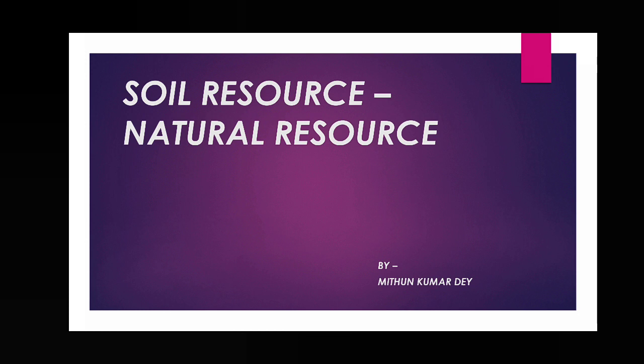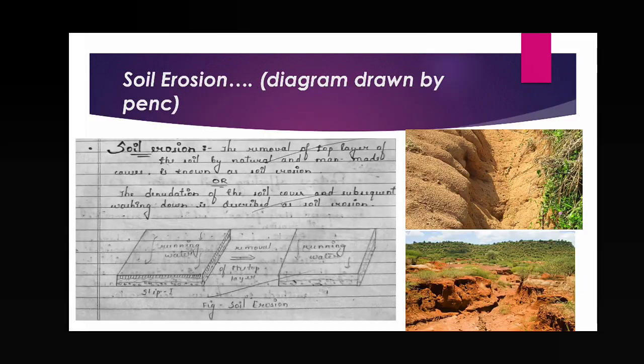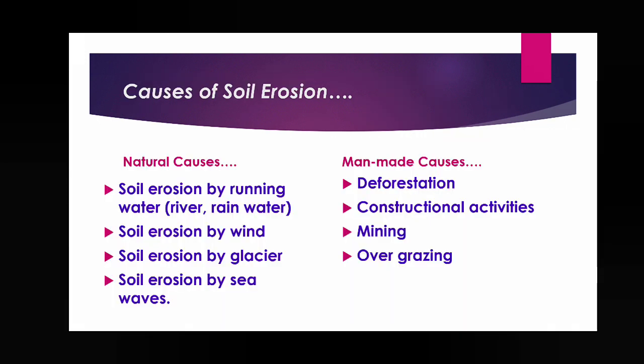We already discussed what is called soil erosion. Soil erosion means the removal or washing down of the top layer of the soil. There are two types of causes — one is natural, another is man-made. So here we have two causes of soil erosion present.